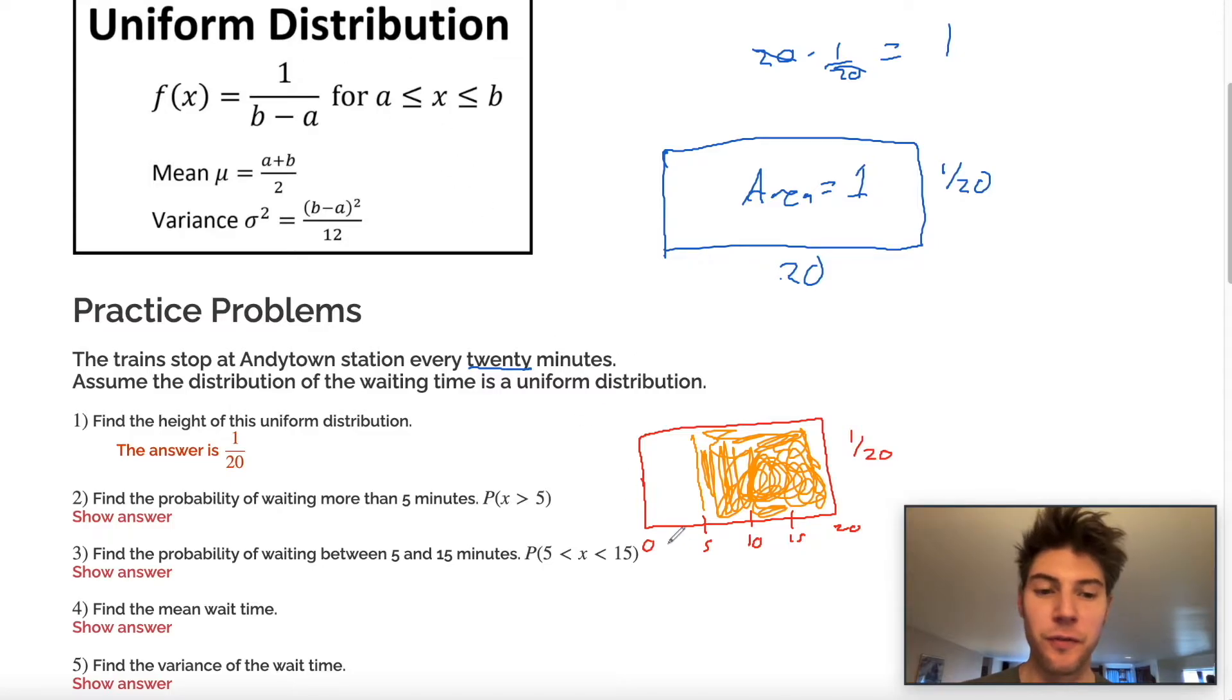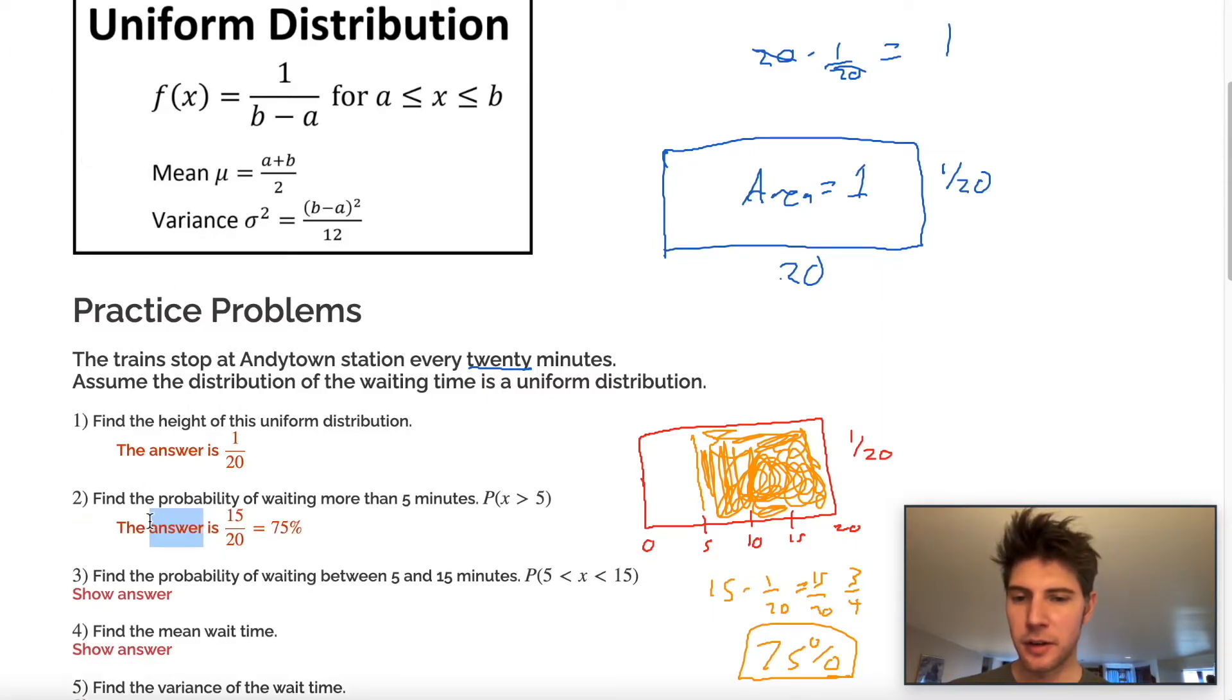The base here is 15 and the height is one over 20. When we multiply that, we get 15 over 20 or three fourths or 75%. So the answer number two should be one of those probably 75%. There it is.